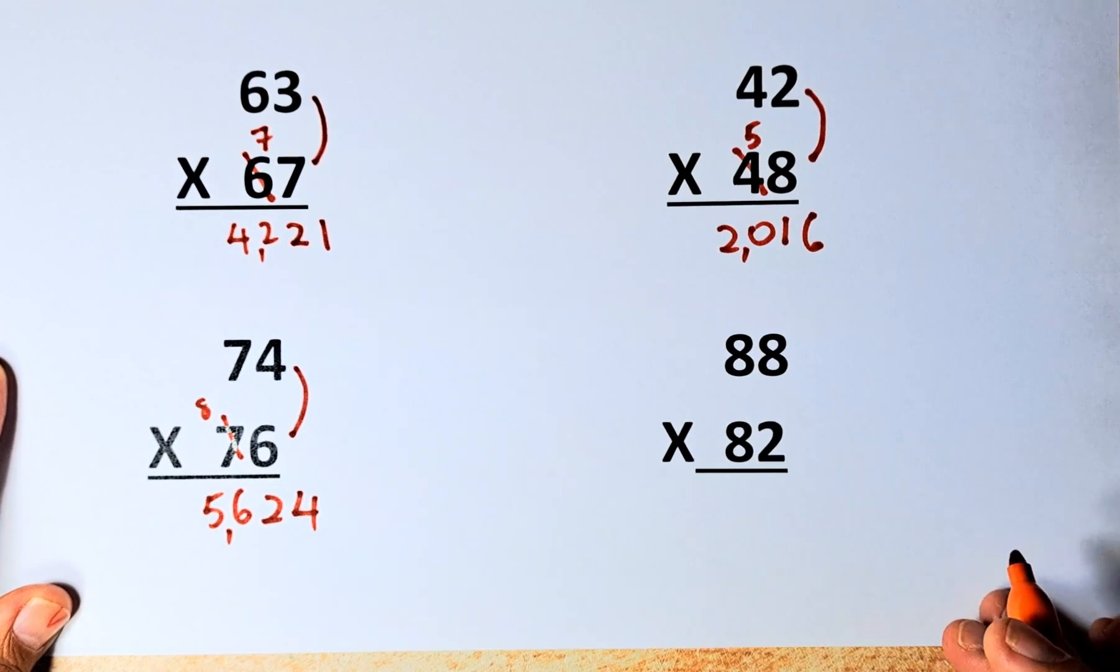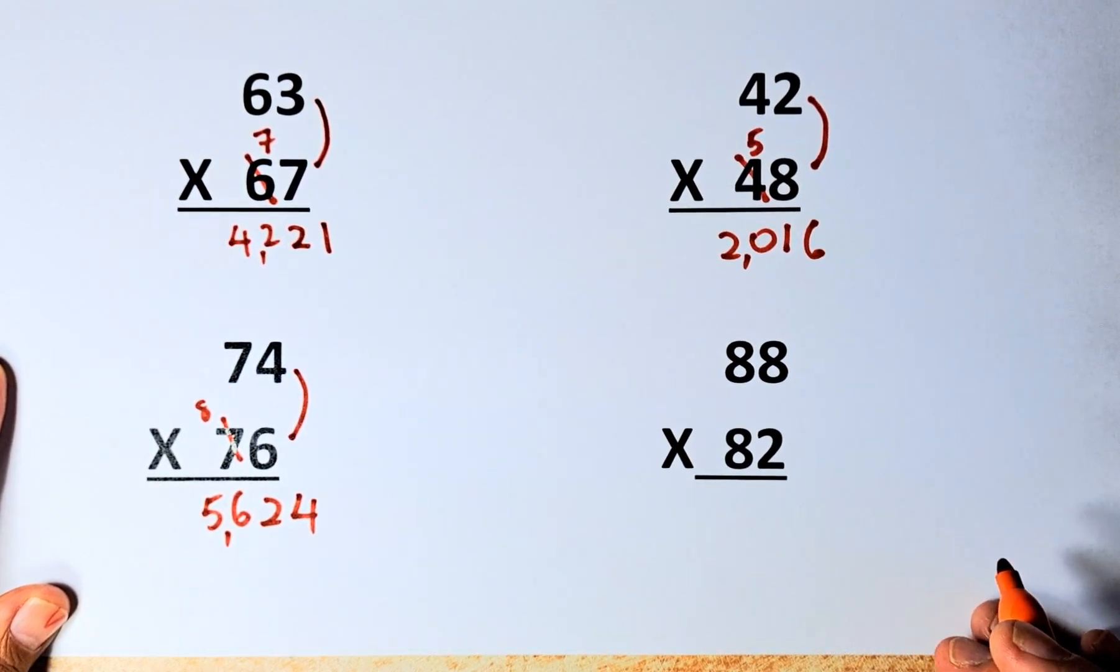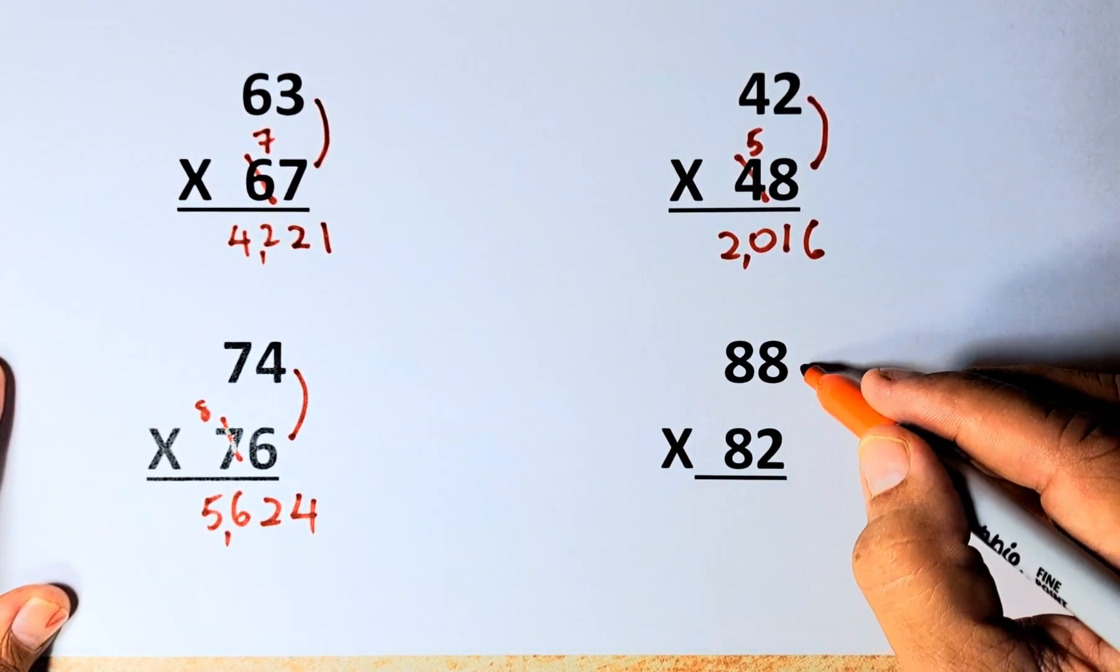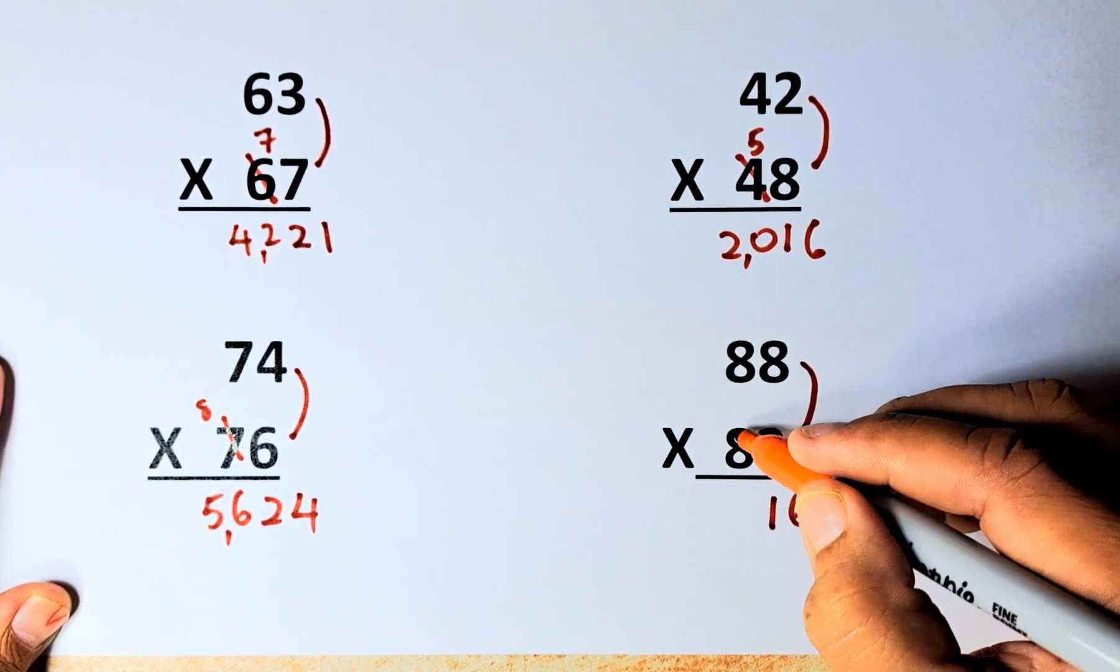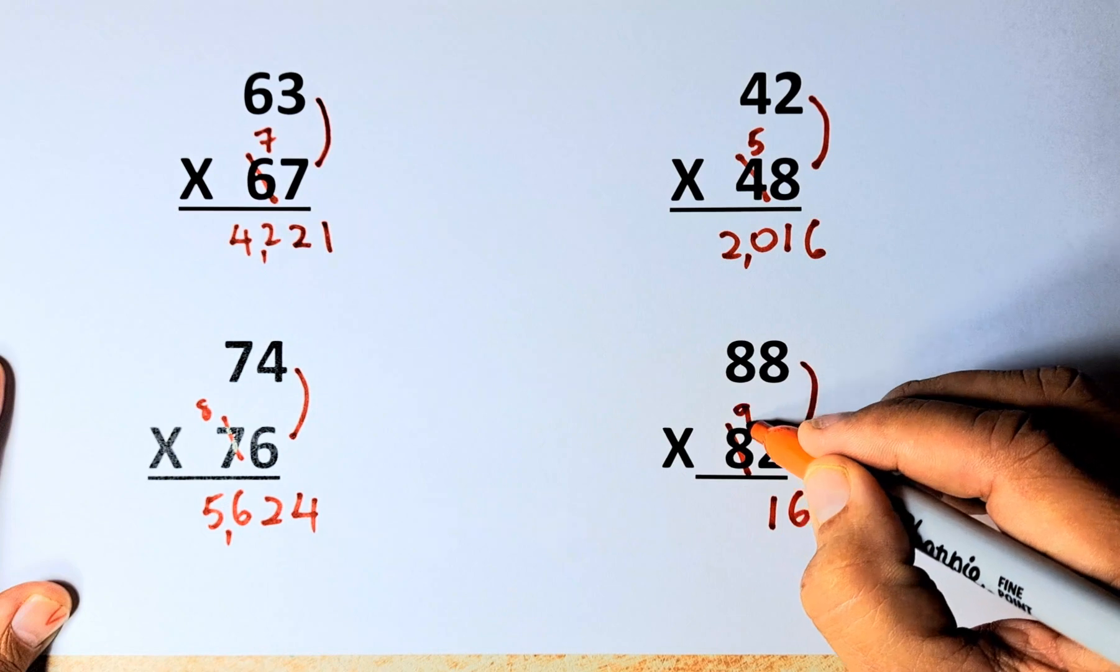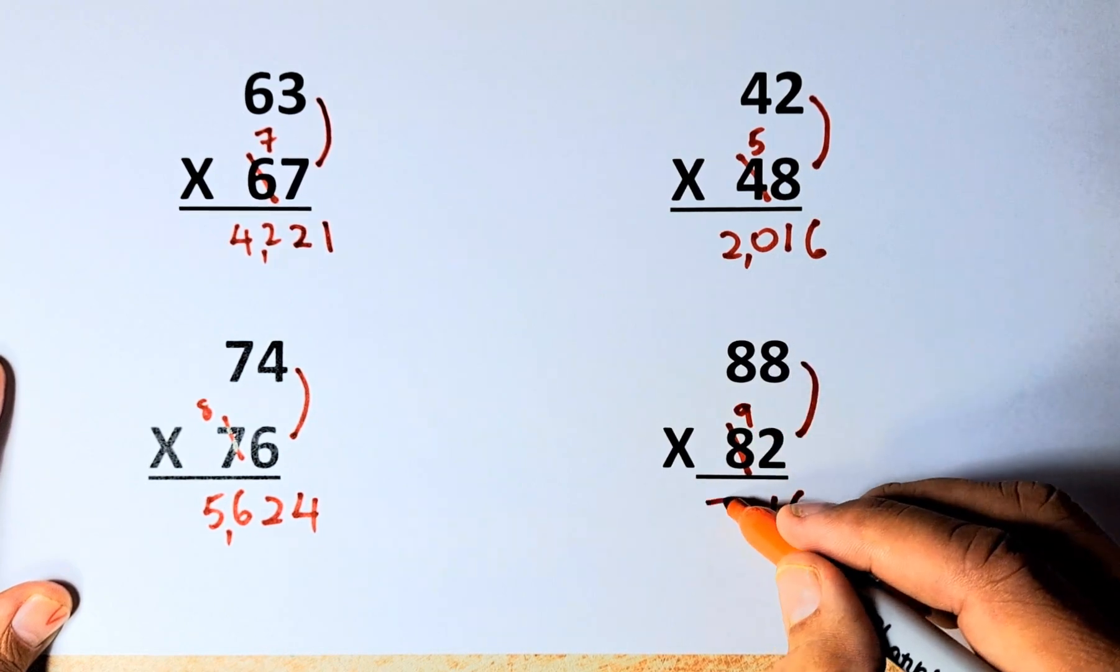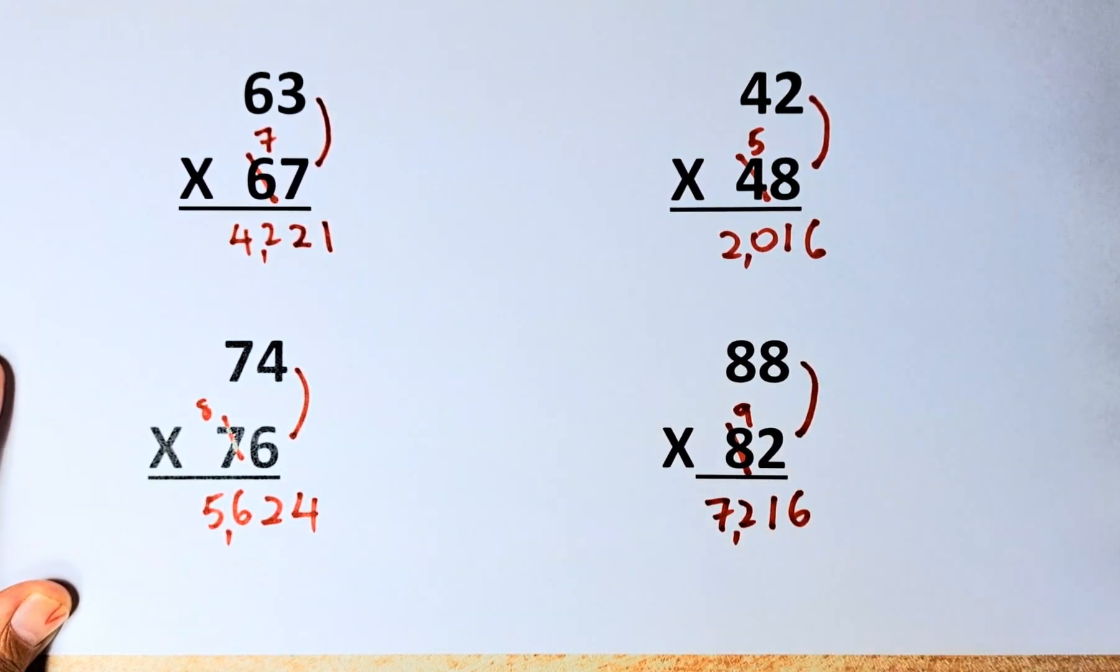And last but not least is 88 x 82. Simple again, 8 x 2 is 16. So we're going to multiply them to get 16. And then 8 increase by 1, it becomes 9. So 8 x 9 is 72. So 88 x 82 is going to be 7,216.